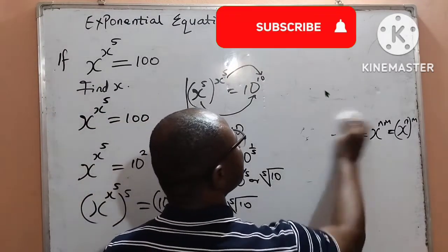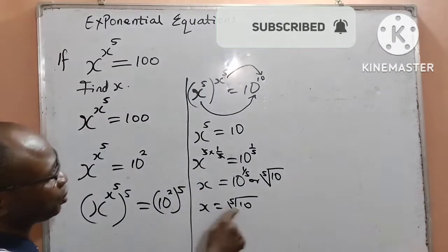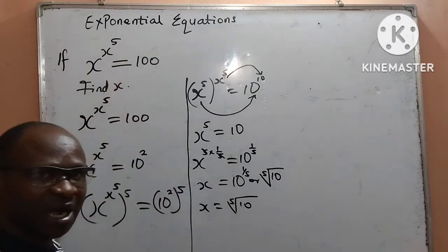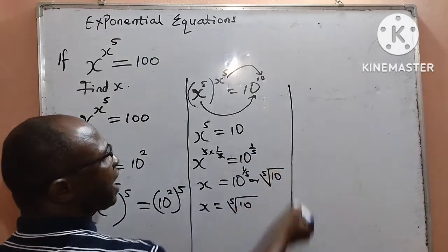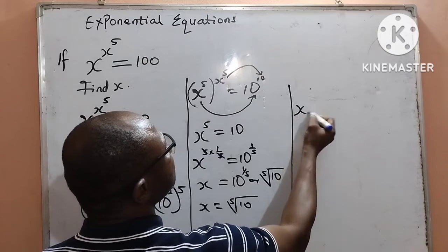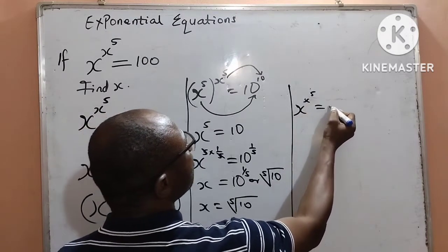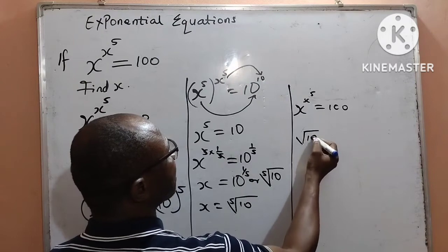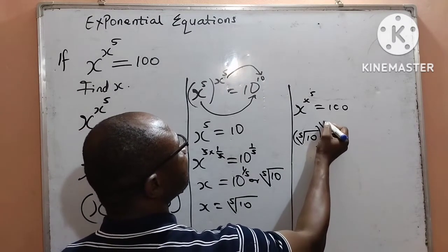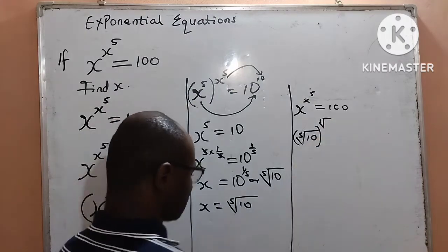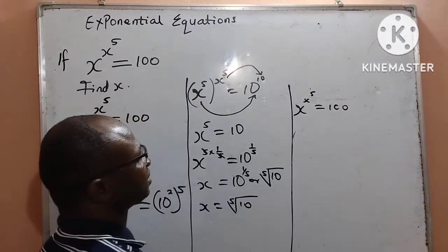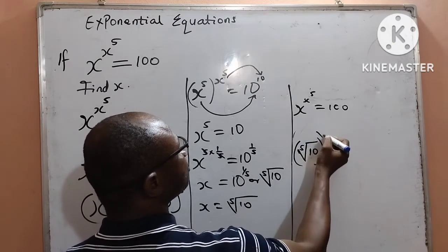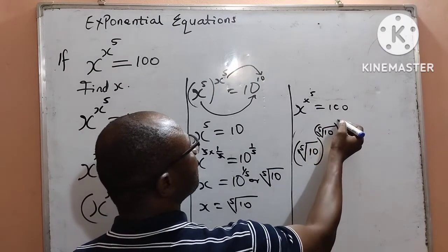I want us to evaluate the answer — that is, to substitute our answer into the position of x to see if it gives us exactly 100. I will now have x to the power of x to the power of 5 equal to 100. Anywhere I see x, I put the 5th root of 10. So that is: the 5th root of 10, to the power of the 5th root of 10, to the power of 5. Let's start from the power. We can see that 10 to the power of 1 over 5 is written as the 5th root of 10, meaning I can write the 5th root of 10 as 10 to the power of 1 over 5.